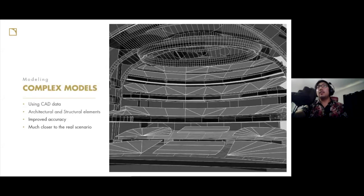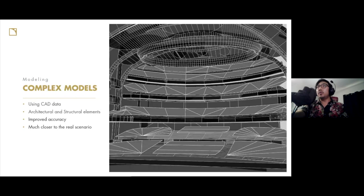If we look at a complex model, these are drawn taking data from something like AutoCAD, Vectorworks, Revit, and a whole number of different types of software. We then use SketchUp as the way of getting into SoundVision. Using this type of data, we are able to get more defined and accurate measurements of architecture and structural elements. We have a much greater sense of improved accuracy, and with enough detail we can get much closer to a real scenario and make our models look much like the real venue.